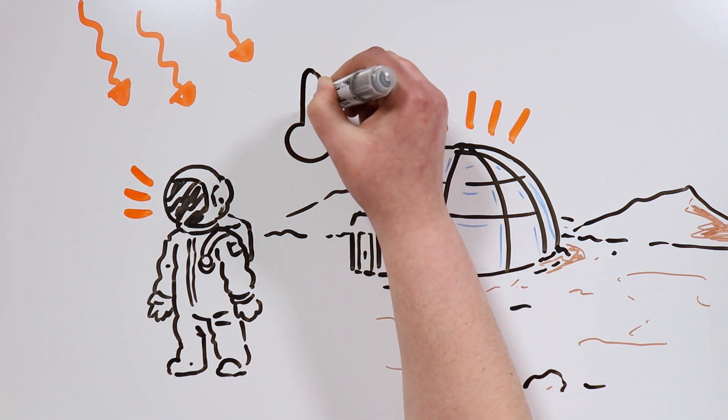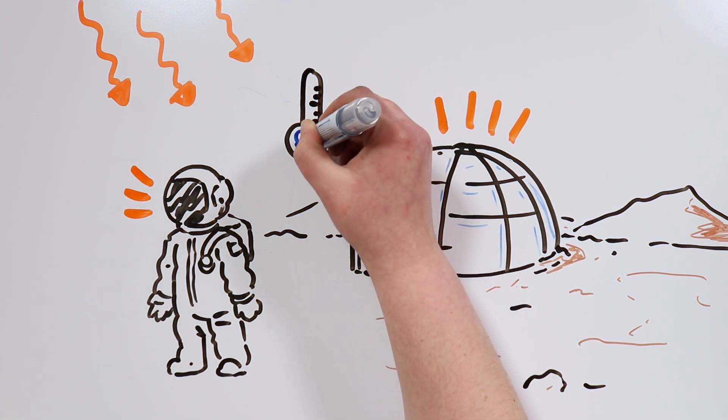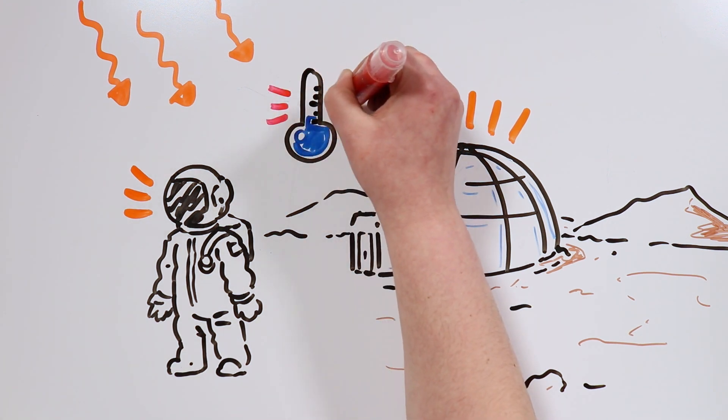The temperatures on Mars are cold and volatile, fluctuating around minus 55 degrees Celsius in winter.